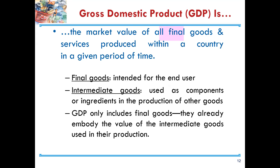The third concept is final goods — goods that are intended for the end user. Another concept is intermediate goods, which are goods used as components or ingredients in the production of other goods. GDP only includes final goods because they already embody the value of the intermediate goods used in their production.